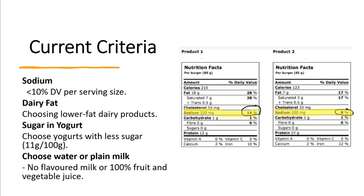Some of the main criteria to watch for when choosing foods: look at the sodium content of packaged foods — the sodium criteria is less than or equal to 10% daily value per serving size. For example, a product with 14% daily value of sodium would be too high for SMP, whereas a product with 8% daily value would fall within the 10% or less requirement.